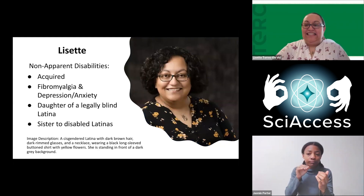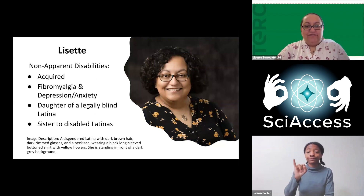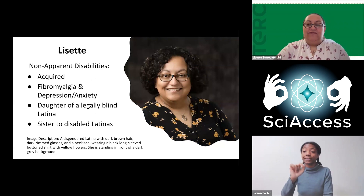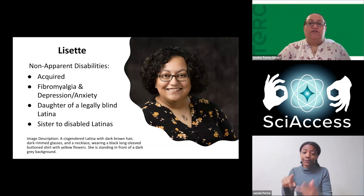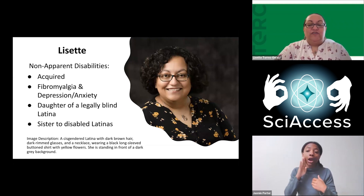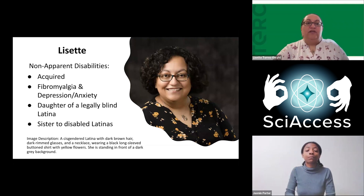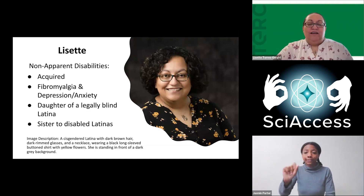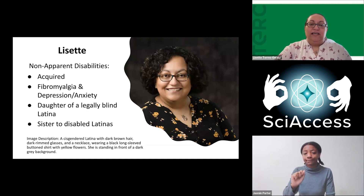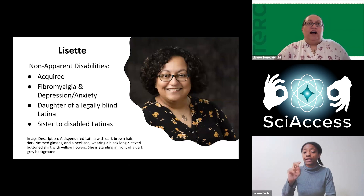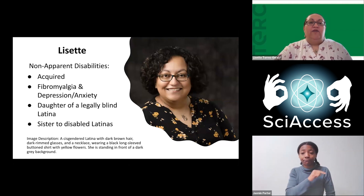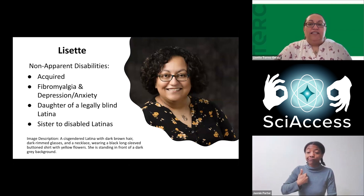Thanks, Daniel. This is Lizette speaking. Here's a photo of myself. I am a disabled Latina. I identify as a mother, scholar, and activist, but I'm also a scientist — a former aquatic ecologist, now social science researcher. I have short brown hair, dark-rimmed glasses, a black long-sleeved shirt with yellow flowers, and a necklace. My non-apparent disability was acquired — I have fibromyalgia, along with depression and anxiety. I also identify as a daughter of a legally blind Latina and with sisters who are also disabled. So though I acquired my disability later in life, I have been learning about disability and what it means to be disabled my whole life.